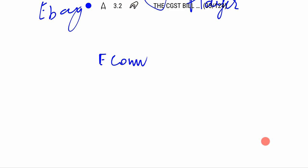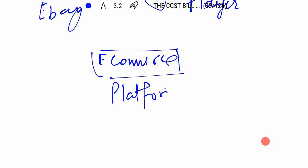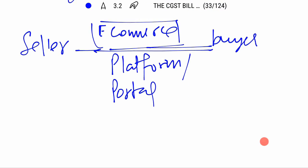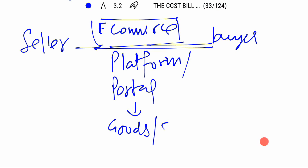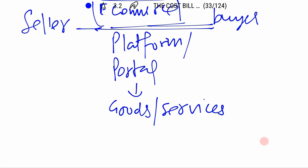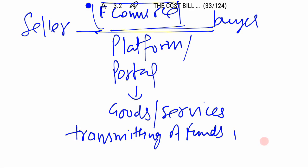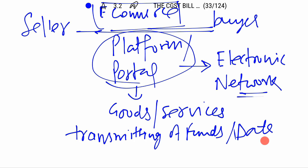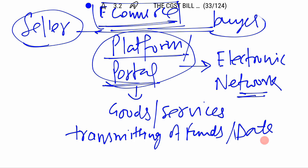If I see e-commerce, e-commerce is a platform — it is a portal that links buyer and seller for selling of goods or services. If we talk about transmitting of funds or data over an electronic platform or electronic network, e-commerce is basically an electronic platform, electronic network, electronic portal which links seller and buyer for selling of goods, providing of services, or transmitting of funds or data.